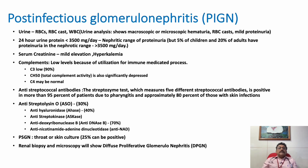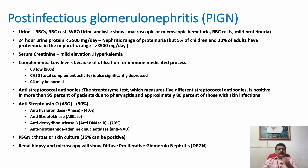For investigations in glomerulonephritis, especially post-infectious, urine routine is always done — urine shows RBCs, RBC casts, WBCs, and proteinuria. A 24-hour urine protein test tells whether the patient has nephrotic-range proteinuria. More than 3500 milligrams per day indicates nephrotic range of proteinuria, and less than 3500 indicates nephritic range of proteinuria.